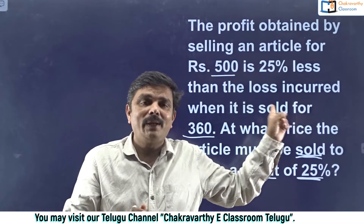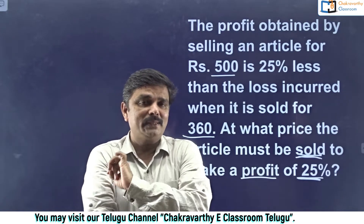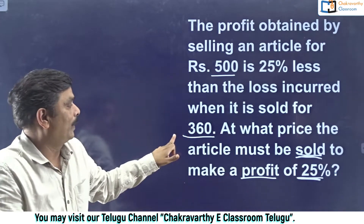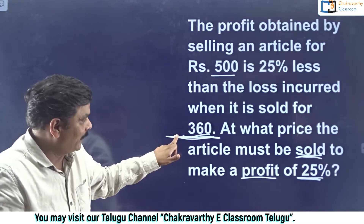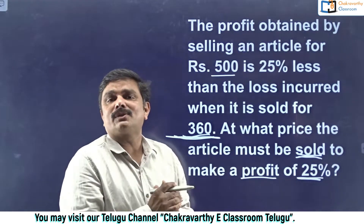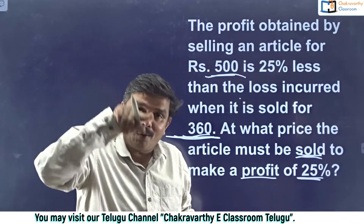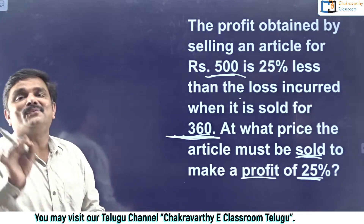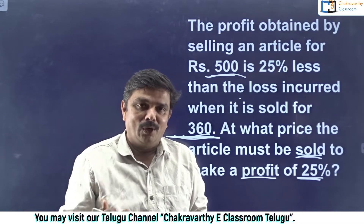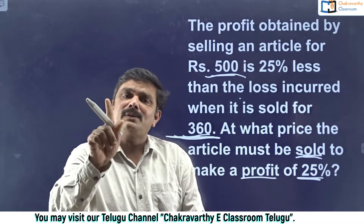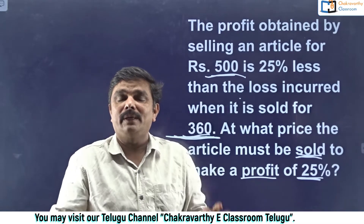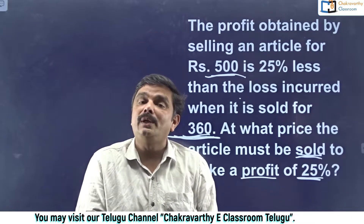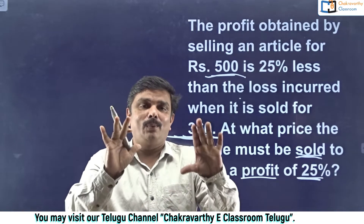They have given a clear clue here. If they sell that article for 500 rupees, they get a profit which is 25% less than the loss when they sell it for 360. When they sell it for 360, they incur some loss. But when they sell it for 500 rupees, they get profit — but that profit is 25% less than the loss in this case. There are two methods I have explained in our regular courses.